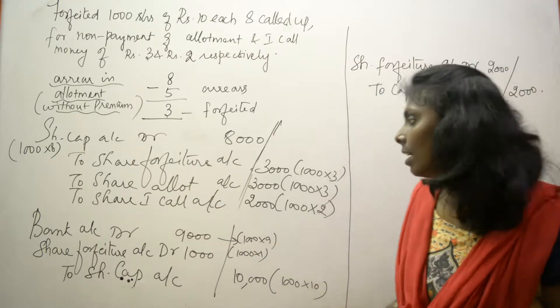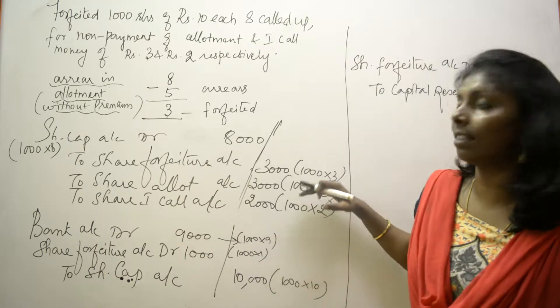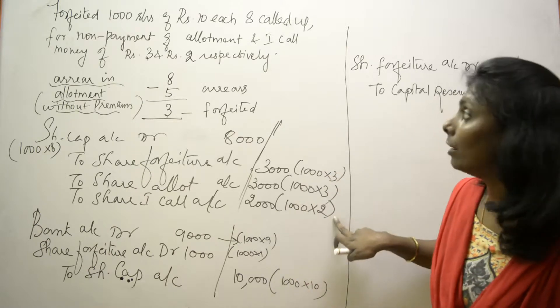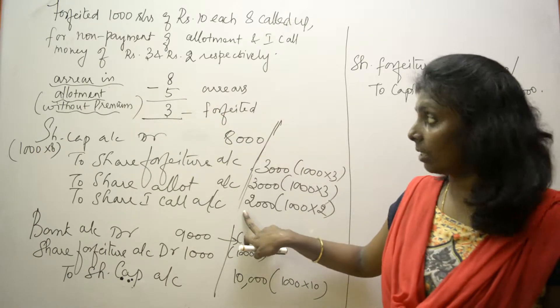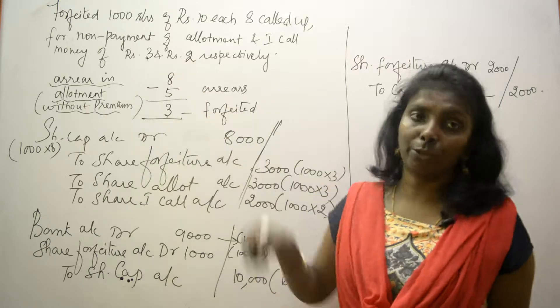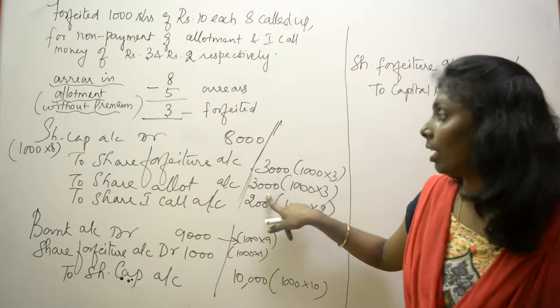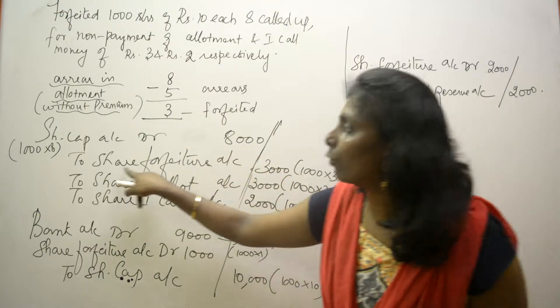How many shares are we forfeiting? 1000 shares. So we'll start filling the amount from here - 1000 into 2 rupees, my call money, so 2000. What about allotment? It's 3 rupees, so 1000 into 3, 3000.